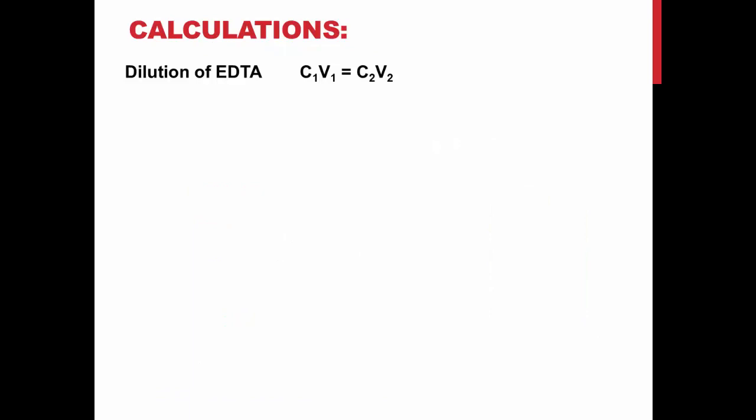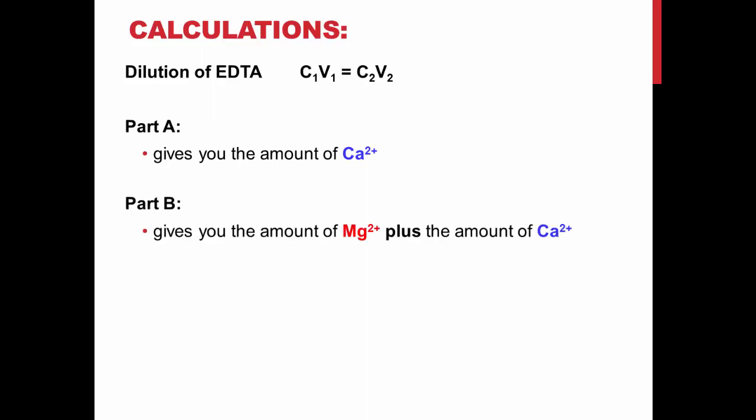Calculations. Note that you will be diluting the EDTA, so don't forget your C1V1 equals C2V2 equation. Part A will have given you the amount of calcium ions, and part B will give you the amount of both magnesium and calcium. Therefore, to determine the amount of magnesium alone, you would simply take your value from part B and subtract your value from part A.